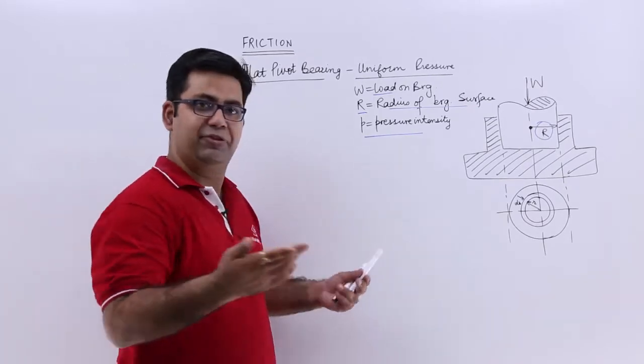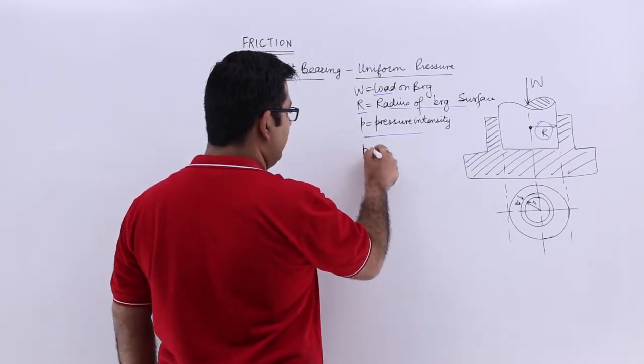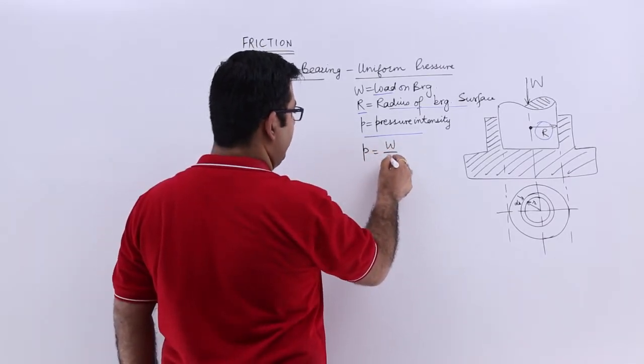So if the pressure is uniform, then P will be equal to load upon area, which is pi R square.